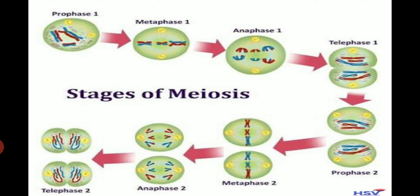We start meiosis two with our recombined daughter cells, each still with 46 chromosomes. But sperm and egg cells only have 23 chromosomes, so we need to cut these cells in half. The process is exactly the same as before, except there is no DNA replication.